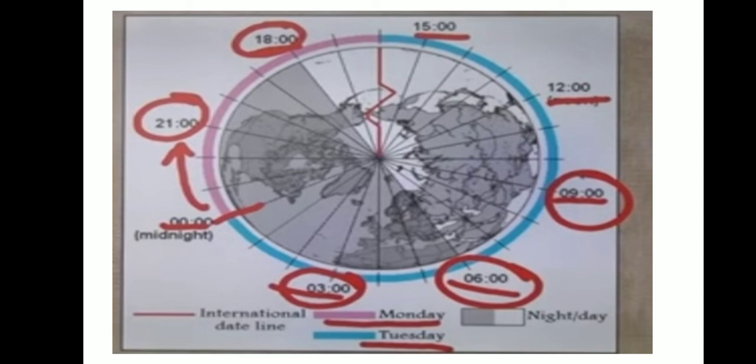There is thus a difference of one day on either side of this imaginary line. For example, if it is Monday on the western side of the 180 degree meridian, it will be Tuesday on the eastern side. This line is known as the International Date Line.